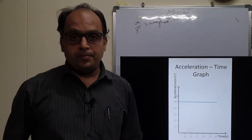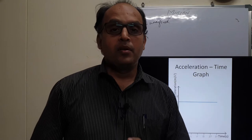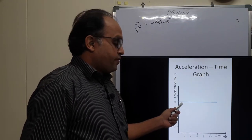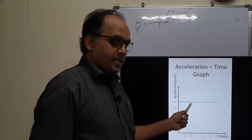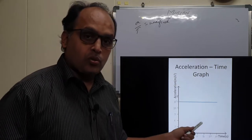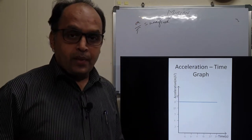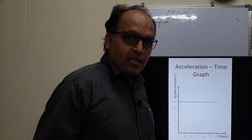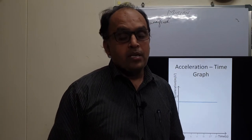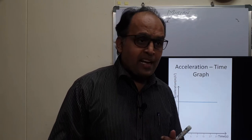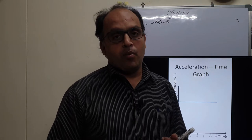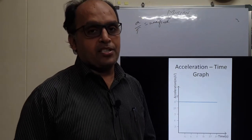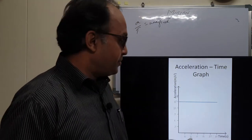Now look at this graph: after 2 seconds the acceleration of a body is 15 meters per second squared, and it remains the same at 4, 6, 8, 10, and 12 seconds. This means the body has uniform acceleration. When the graph is a straight line parallel to the x-axis in the acceleration-time graph, the body moves with uniform acceleration. The velocity of the body is non-uniform in this case, since there is acceleration present.